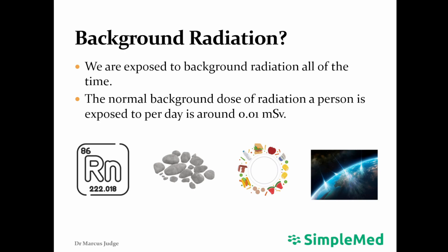The normal dose of background radiation a person is exposed to per day is around 0.01 millisieverts. Sources of background radiation include radon gas in the air, rocks, food, and cosmic rays.